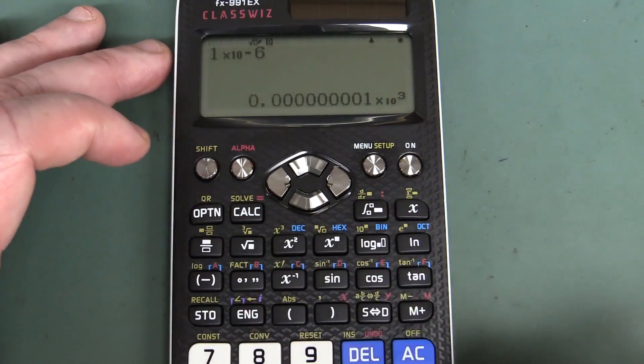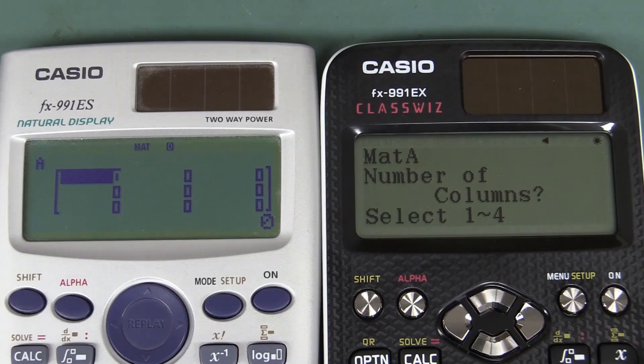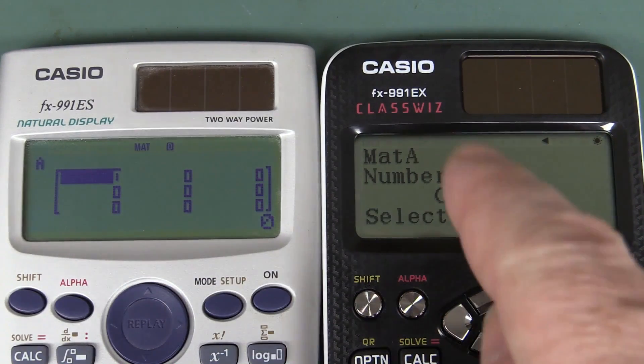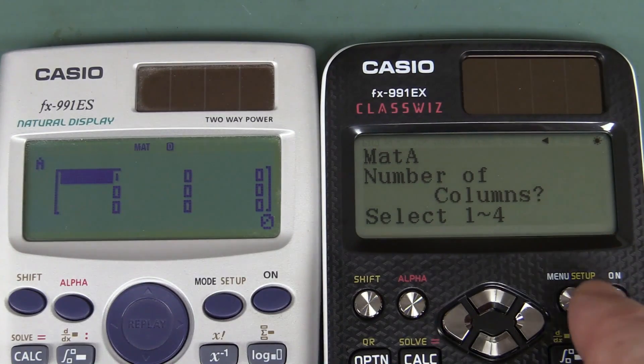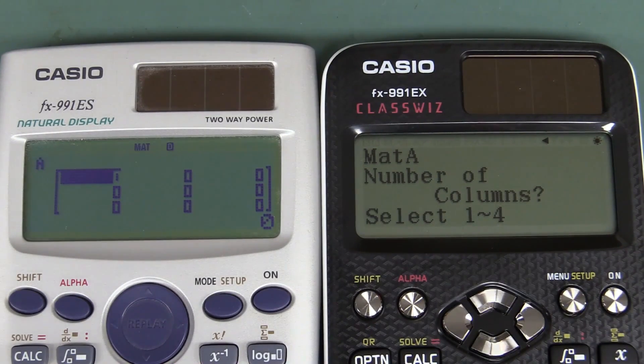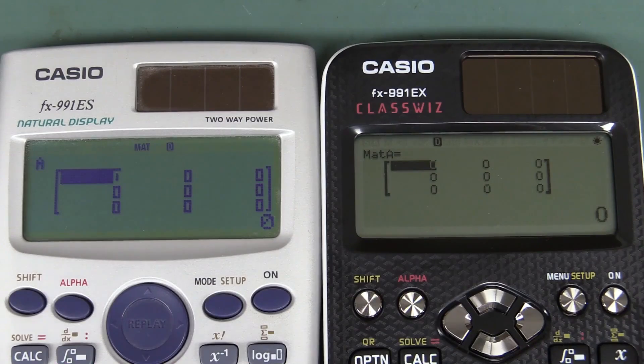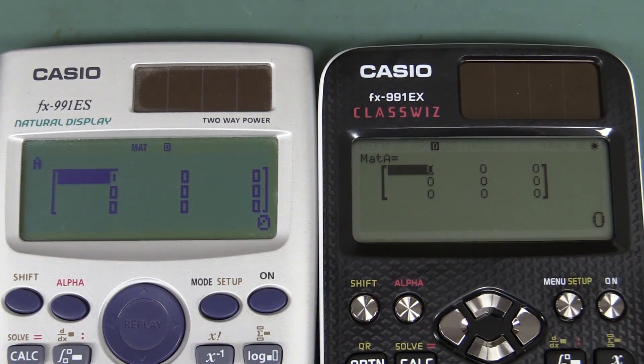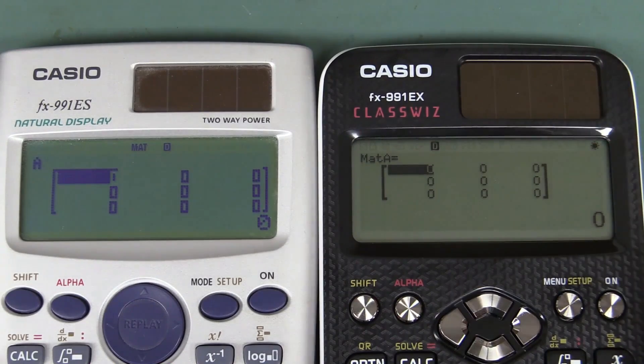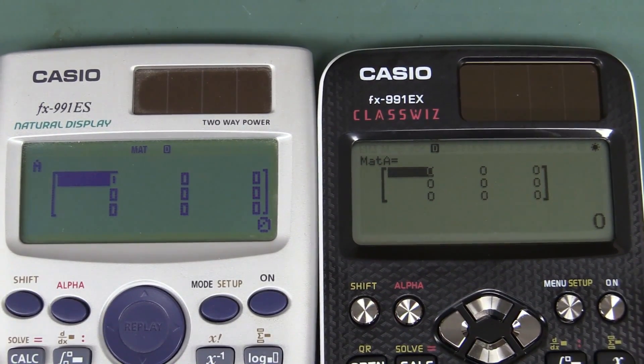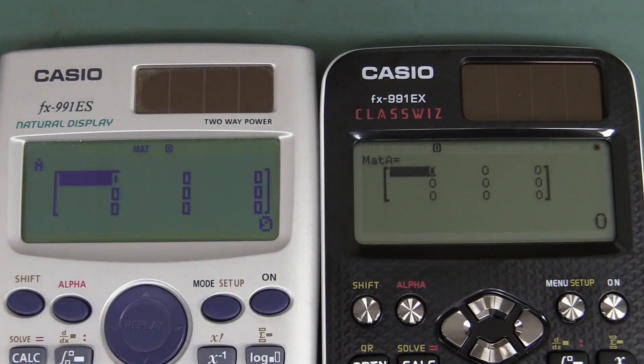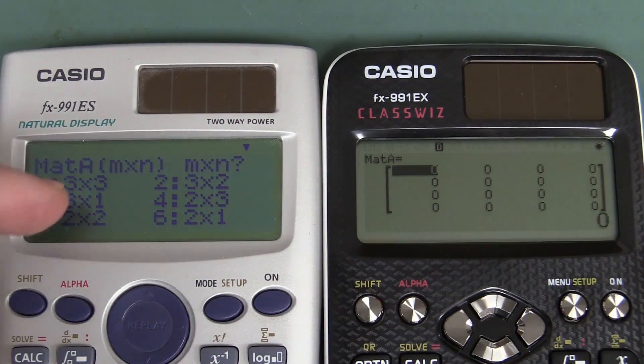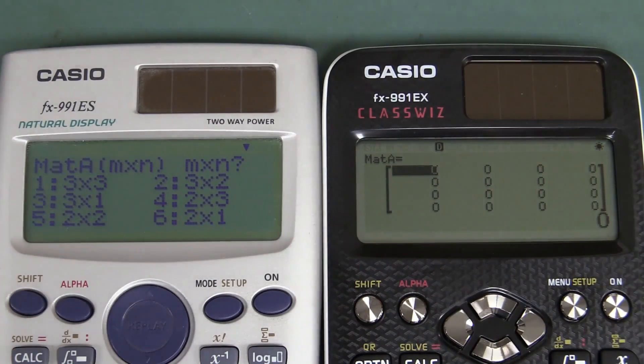So the higher resolution screen, one of the highlights of this thing, it's four times the resolution of the old one. It's 192 by 63, which doesn't sound like a lot, but it adds up. And if you look at a three by three matrix like this, you can really see the difference of the amount of data that you can fit. The resolution of the text and amount of data you can actually fit on the screen, it's much, much better. You can actually see it can do four by four matrices, whereas the old one could only do three by three on the screen.